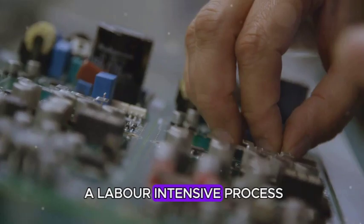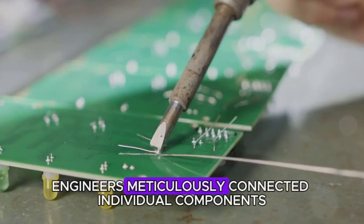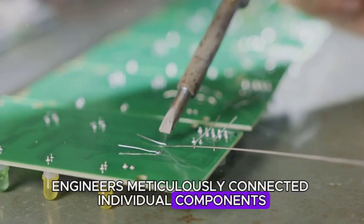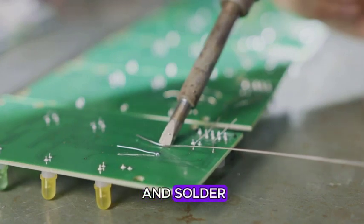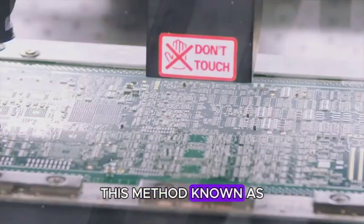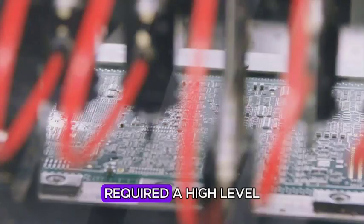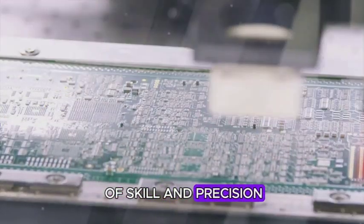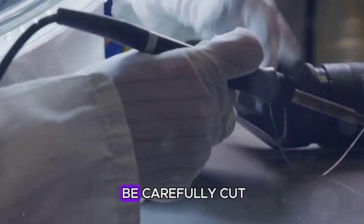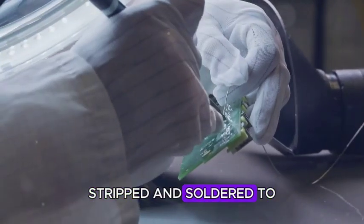In the early days, constructing a circuit was a labour-intensive process. Engineers meticulously connected individual components using lengths of wire and solder. This method, known as point-to-point wiring, required a high level of skill and precision. Each wire had to be carefully cut, stripped and soldered to the correct terminal.